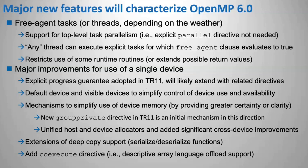We're also significantly improving the use of device memory. We've added a new directive, the group private directive, which says that you want a private copy in each contention group of a given variable. That will allow a compiler to very easily say, I'm executing on this GPU, let me use GPU shared memory for that, so now I can know that I'm getting it allocated where I want. We've also added a bunch of improvements for allocators, allowing you to fix the partition size and get other information about the memory on the device, and also to be able to allocate memory on a given device from the host or potentially from other devices.